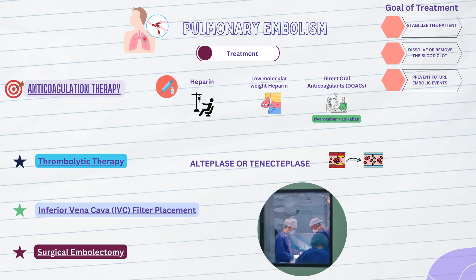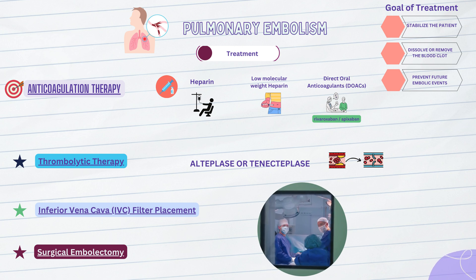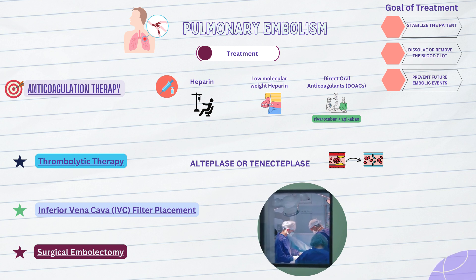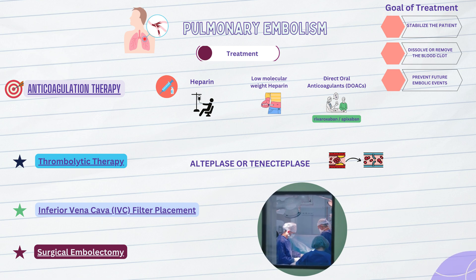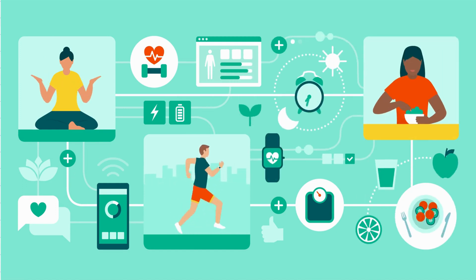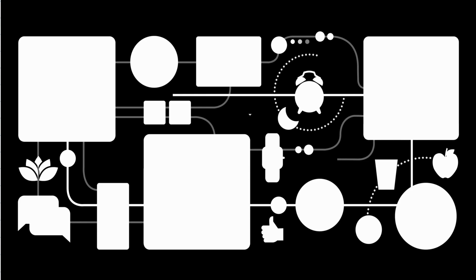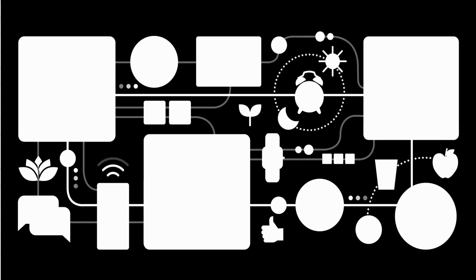These additional treatment options are considered in specific cases where the risk-benefit ratio is carefully assessed by the healthcare team. After the acute treatment phase, long-term management and prevention of recurrent pulmonary embolism are important. This may involve continued anticoagulation therapy or, in some cases, the use of compression stockings to promote blood flow in the lower extremities. Lifestyle modifications such as regular exercise, maintaining a healthy weight, and avoiding prolonged periods of inactivity can also help reduce the risk of blood clot formation. Patients should follow up with their healthcare providers regularly to monitor their condition, adjust medication dosages if necessary, and address any new symptoms.